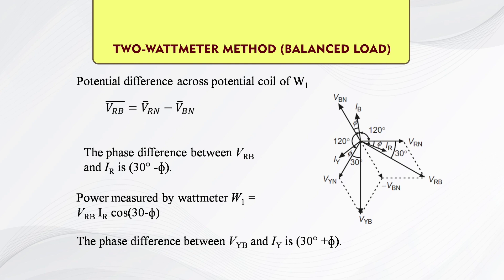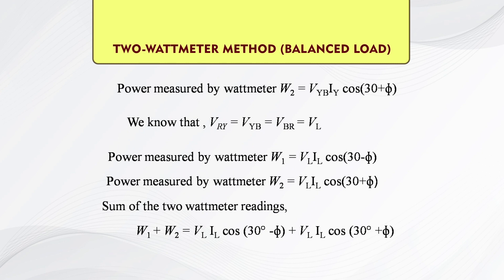Because (30 minus φ) is the phase difference between V_RN and the current I_R. The phase difference between V_YB and I_Y is (30 plus φ). So, power measured by wattmeter 2 is V_YB · I_Y · cos(30 plus φ). For a balanced load, all three line voltages are equal: V_RY equals V_YB equals V_BR equals V_L (line voltage). So, W1 equals V_L · I_L · cos(30 minus φ), and W2 equals V_L · I_L · cos(30 plus φ).